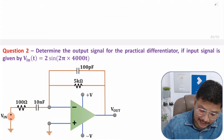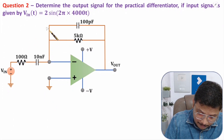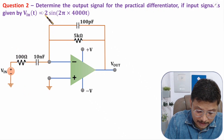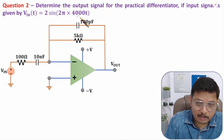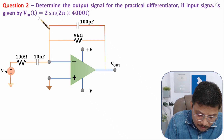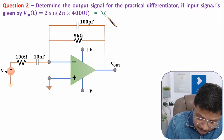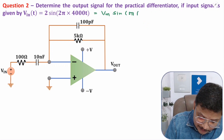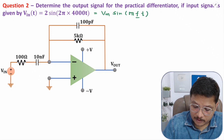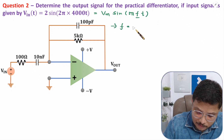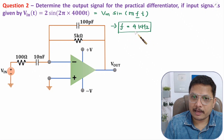Now I am going to solve the second problem. The circuit is the same as the first question, but the question is different — we need to determine the output signal when the input signal is given. If we compare the input with Vm·sin(2π·F·t), then here F is 4000 Hz, meaning 4 kilohertz. So F equals 4 kilohertz.